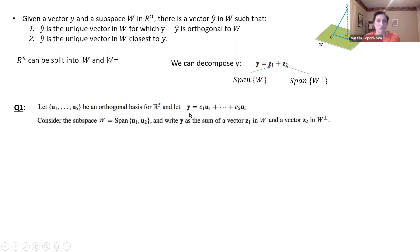So we can write down our vector y in coordinates of our orthogonal basis. So we basically have five weights, c1 and each weight multiplied by the basis vector, c1 times u1 plus c2 times u2, all the way to c5 times u5.